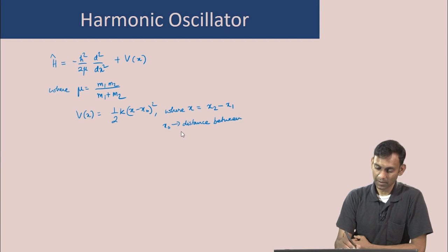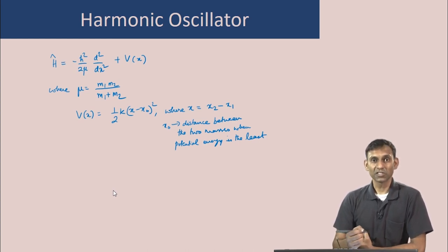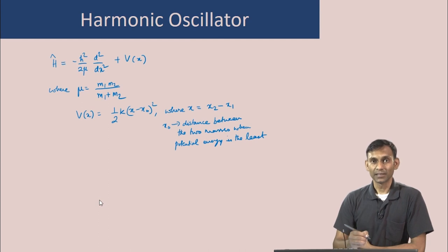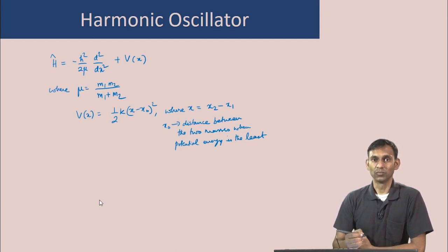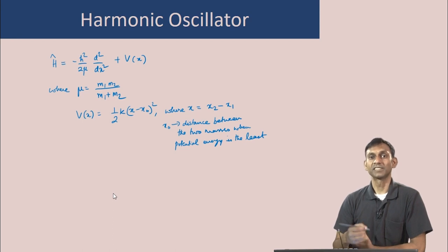x₀ is the distance between the two masses when the spring is neither stretched nor compressed — the lowest potential energy configuration. We can now understand that the vibration of a diatomic molecule can be modeled by the motion of a single particle in a harmonic potential, as these two problems are mathematically exactly equivalent, using the reduced mass μ = m1·m2/(m1 + m2). This idea can also be extended to polyatomic molecules, where the vibration is modeled as a sum of several one-dimensional oscillators.